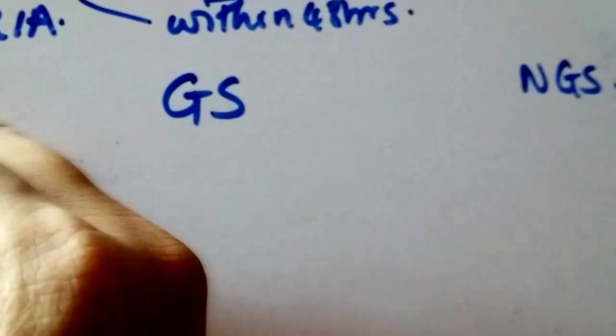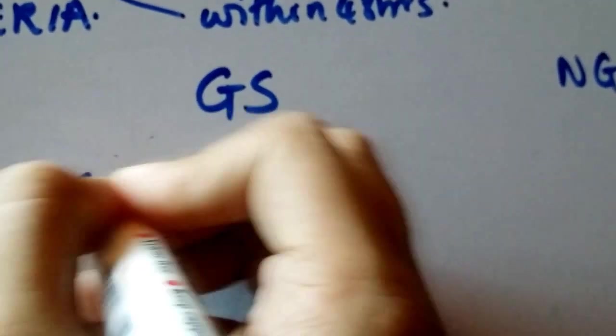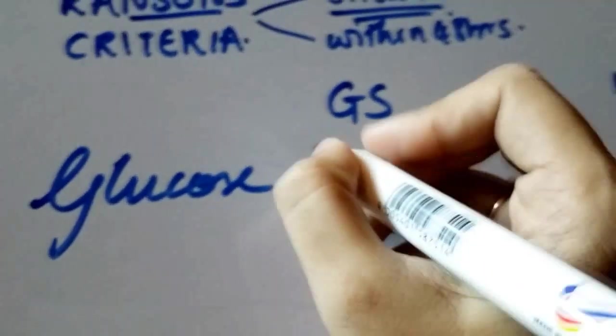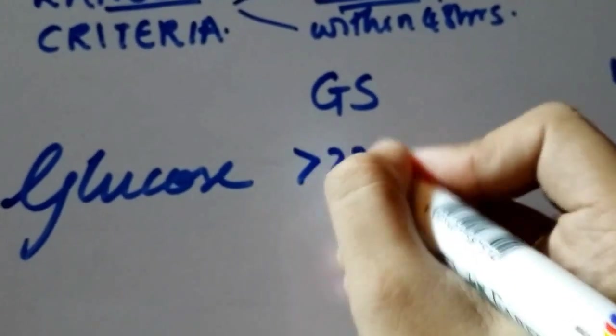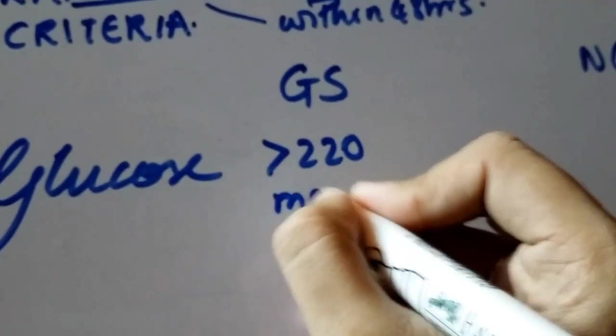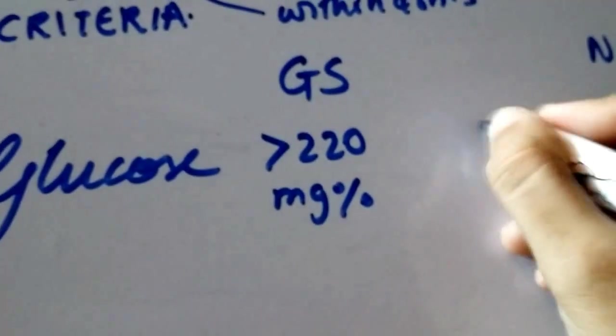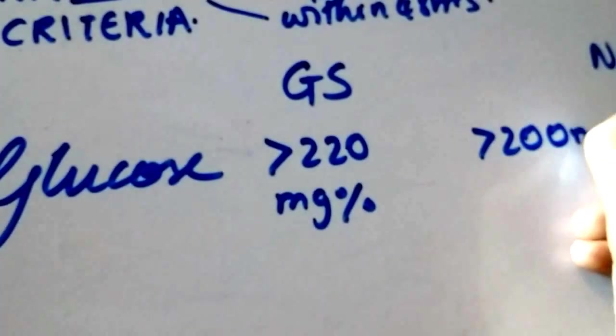So we have glucose. And in gallstone pancreatitis, glucose is greater than 220 mg percent. And in non-gallstones, it's greater than 200 mg percent.